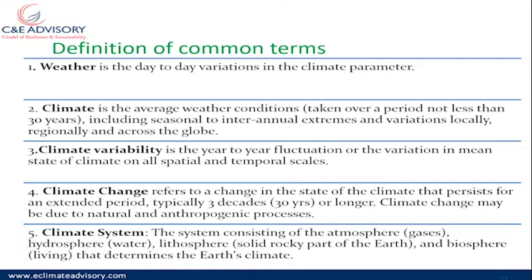Climate variability is very important because sometimes it is mistaken as climate change. But there's a difference. When we talk about climate change, we are referring to a change in the state of climate that persists for a long period — typically three decades or 30 years or longer. Climate change may be due to natural and anthropogenic, that is human, processes, and it requires data analyzed over a longer period showing that the climate is actually changing — for example, temperature becoming higher or increased rainfall.